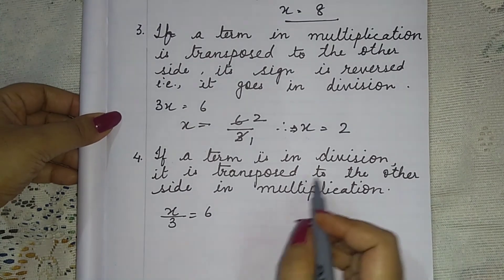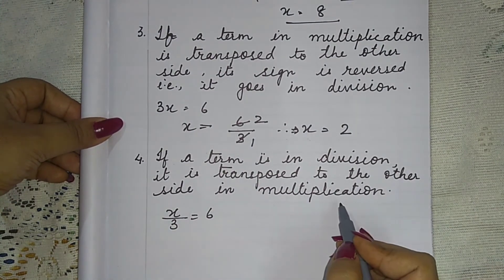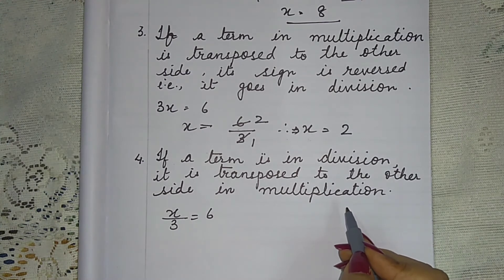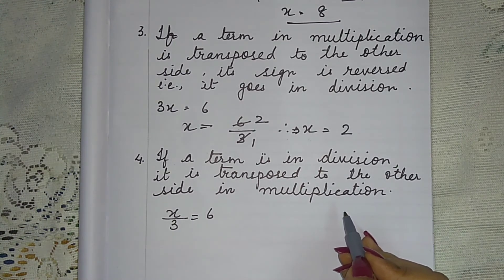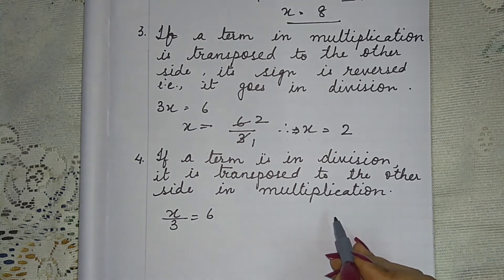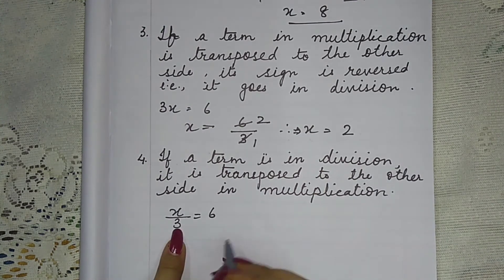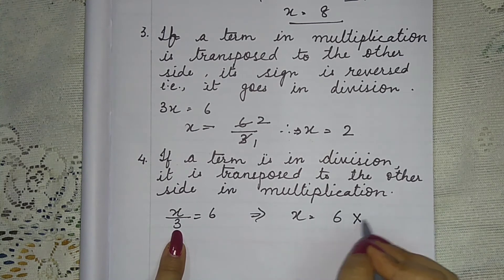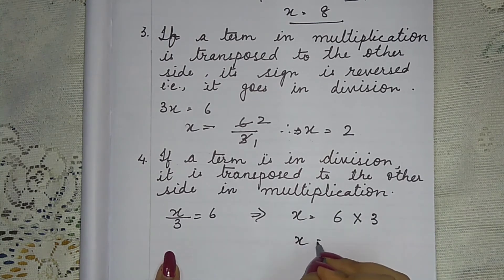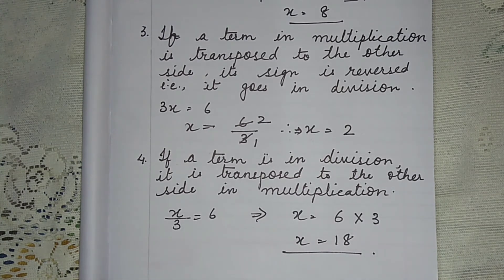Point number 4: if a term is in division, it is transposed to the other side in multiplication. For example, x by 3 equals 6. The 3, which is dividing, moves to the right side as multiplication: x equals 6 multiplied by 3, so x equals 18.